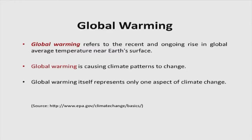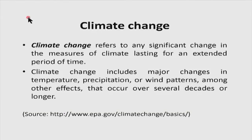Global warming in itself represents only one aspect of climate change. If climate change happens, there are several consequences and other things which will happen. It is understood that this climate change is happening because of global warming. Climate change means any major changes in temperature, precipitation, or wind patterns and other effects that occur in a considerable amount — meaning the major ones, probably not the minor ones.